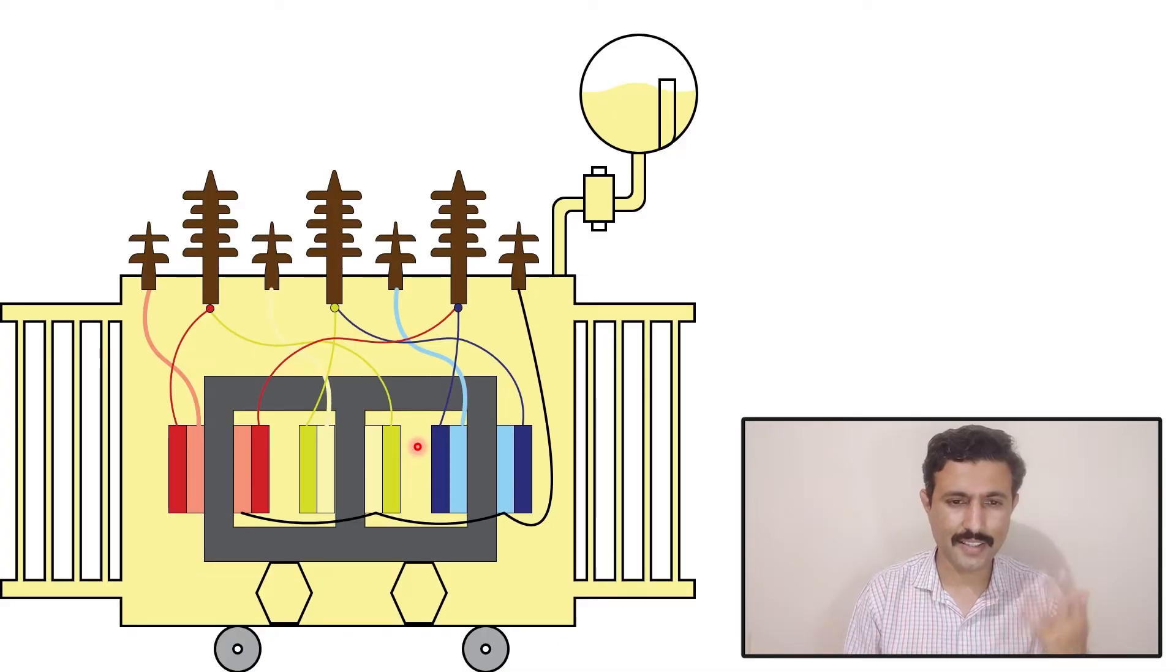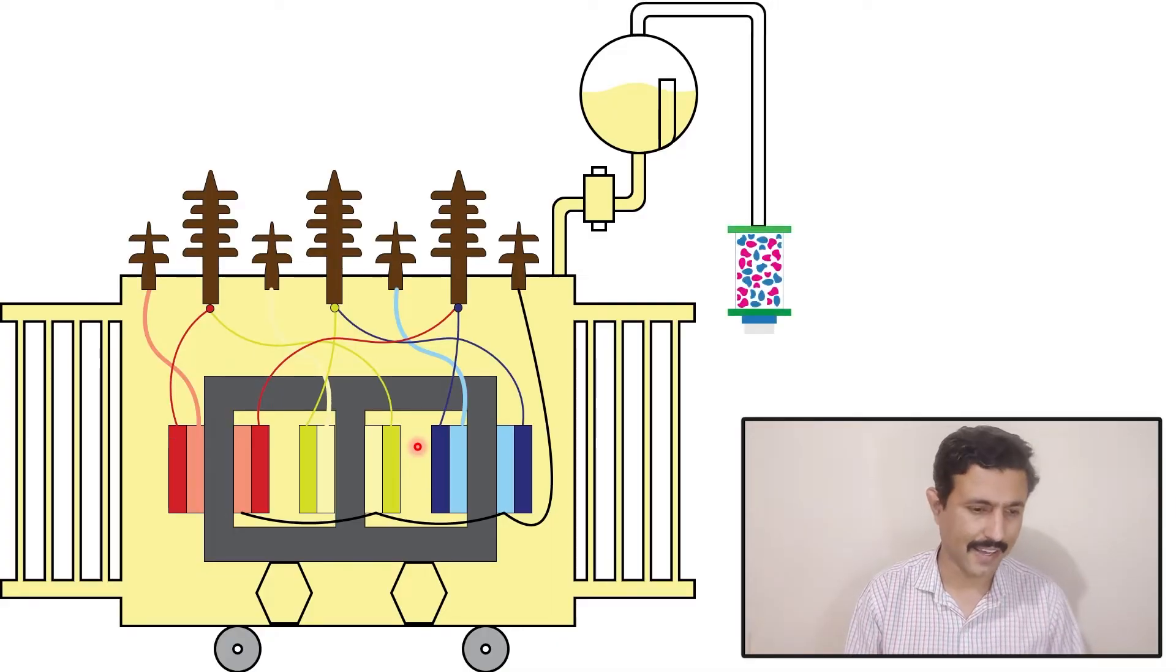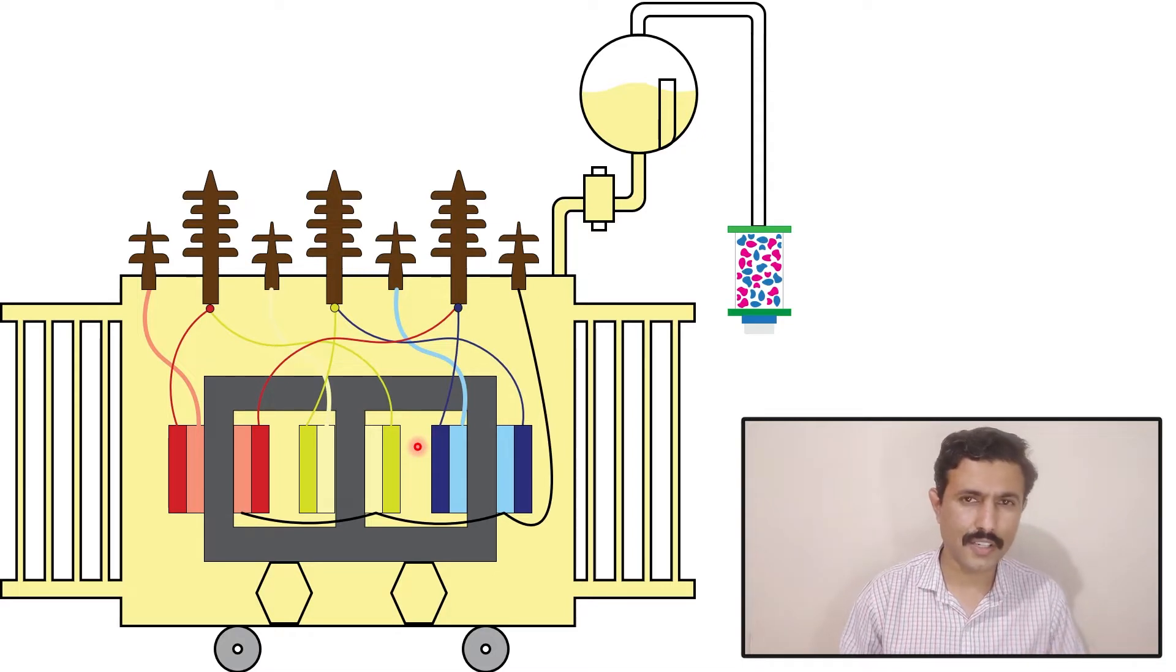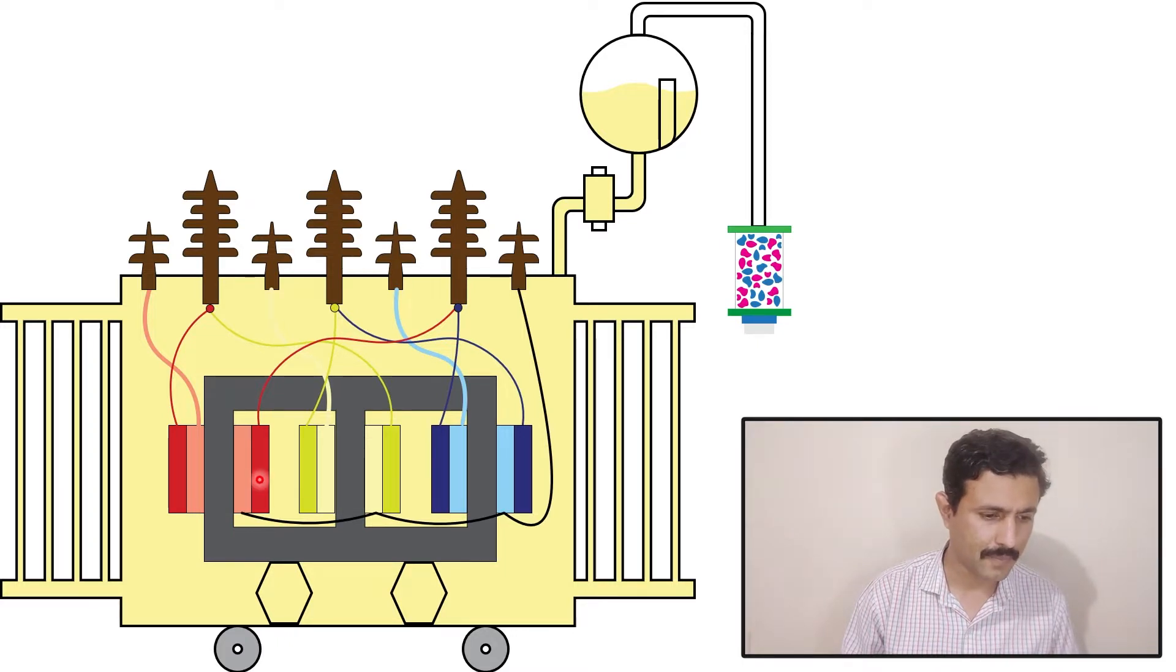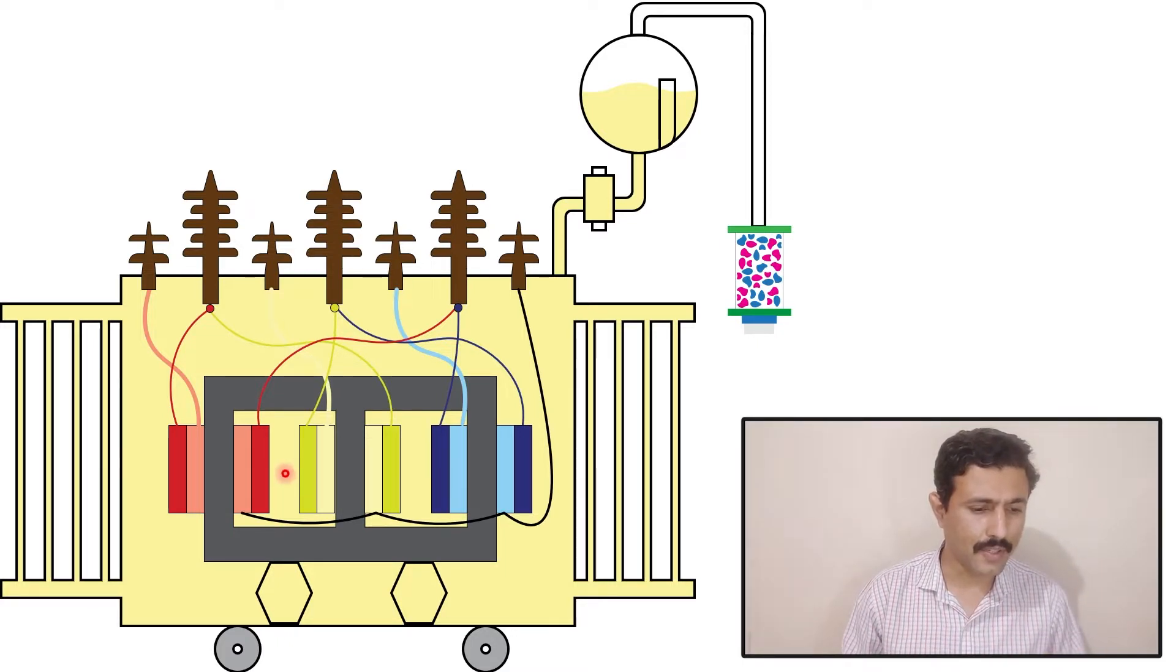The breather is connected with the conservator tank like this. When the transformer is working on full load condition, lots of heat is produced inside the winding. The oil in the transformer is filled for two purposes.